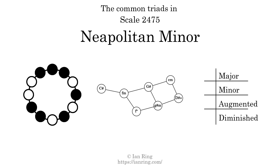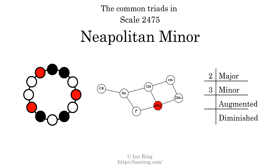Here are the common triads present in this scale. The diagram in the center is a graph of parsimonious voice leading between triads. There are two major triads, three minor triads, one augmented triad, and one diminished triad.